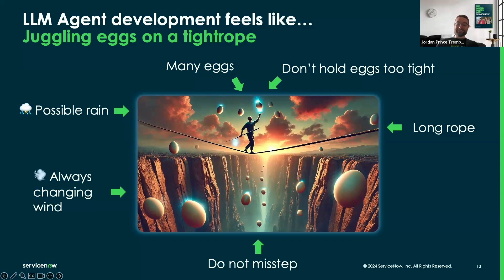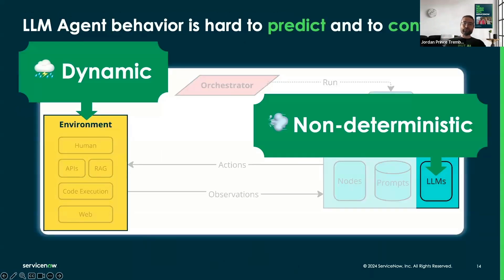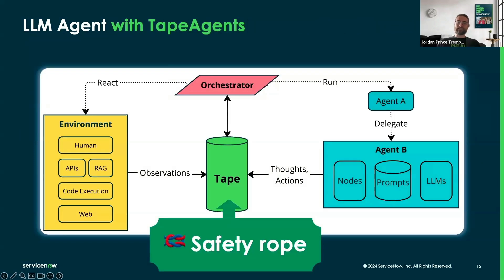Most importantly, do not miss steps — like your agent that takes irreversible actions on the environment with high consequence. In sum, LLM agent behavior is hard to predict and to control. The environment is dynamic like the weather, and LLMs are non-deterministic like the wind. This is why we're introducing TapeAgent.